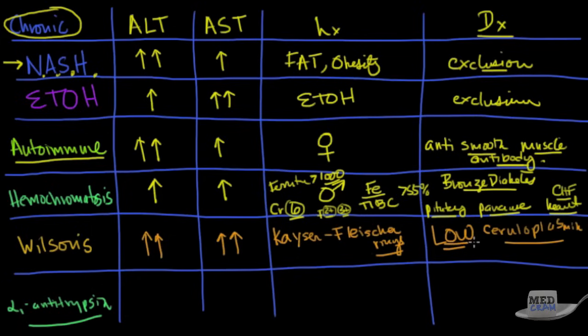And the key here is not a high, but a low ceruloplasmin. And why is that? Because it's trying to suck up all the copper. This is abnormal copper deposition. So you get hemolysis and actually you get a low ALK FOS and a low ceruloplasmin ratio.